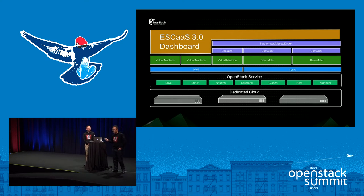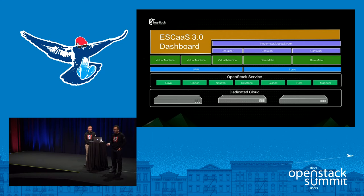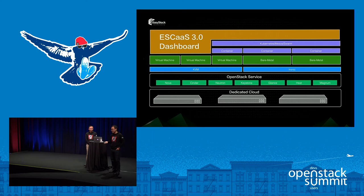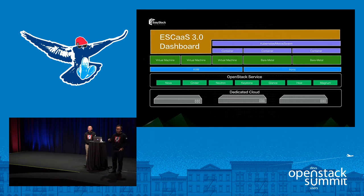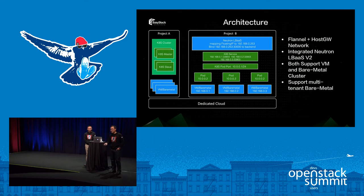This is the functional architecture of the ESCAST 3.0 dashboard. You can have a dedicated cloud on servers. Above that, we deploy OpenStack services like Nova, Cinder, Neutron, Keystone, and Glance, and we use Ironic and the KVM hypervisor to provide virtual machines and bare metal resources. Above that, we can deploy a Kubernetes or Swarm cluster on virtual machines or bare metals. All these resources can be managed through the ESCAST 3.0 dashboard. Now I hand over to my colleague Ho Ming for the detailed architecture.